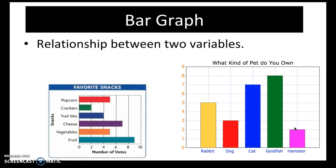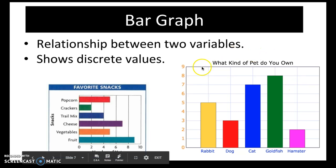Bar graphs show relationship between two or sometimes more variables. They show discrete values and what I mean by that is in this example of what kind of pet do you own, five people, which is five being a discrete value, five people own a rabbit.